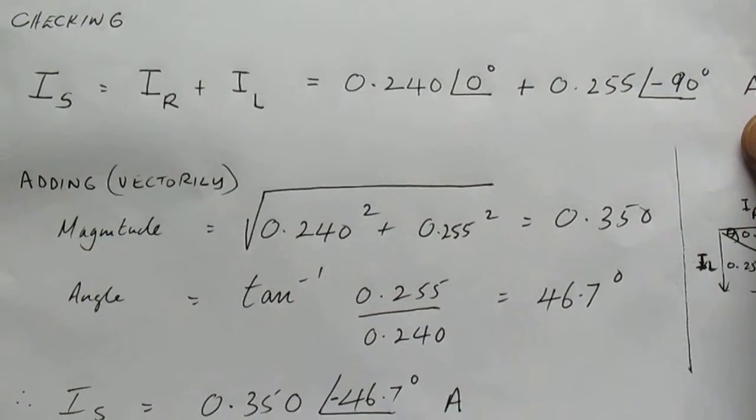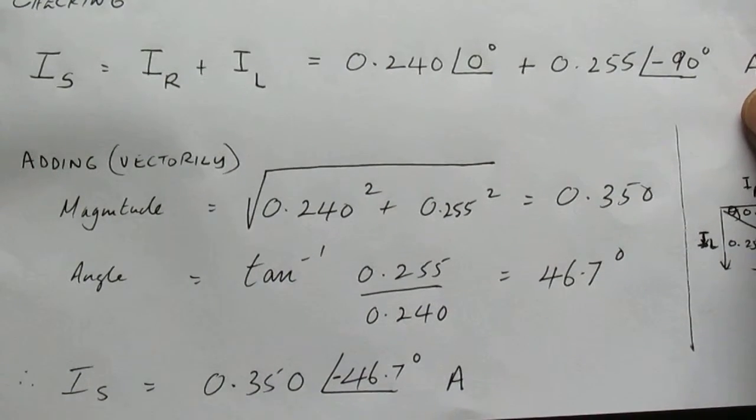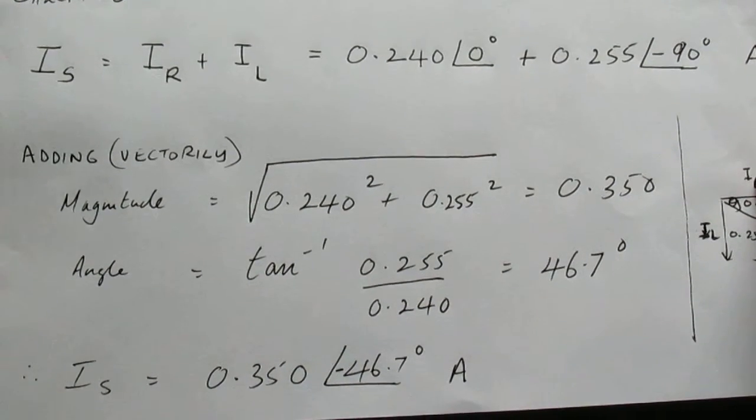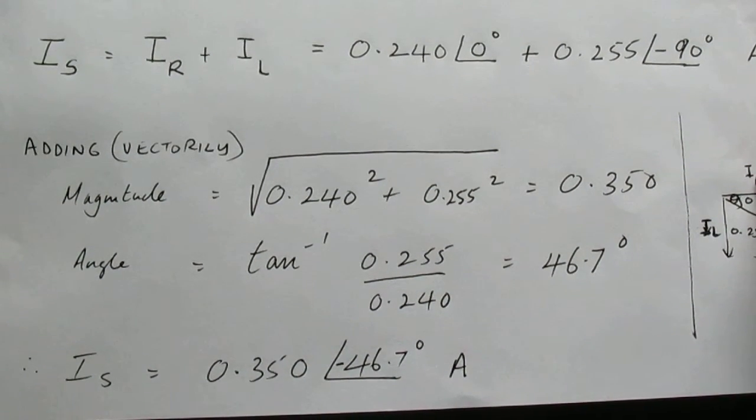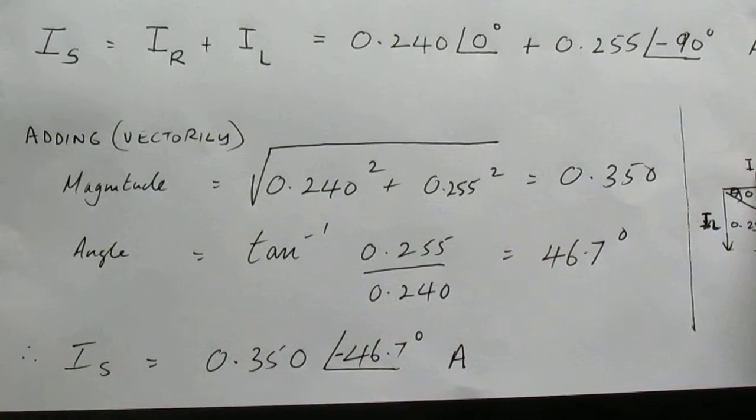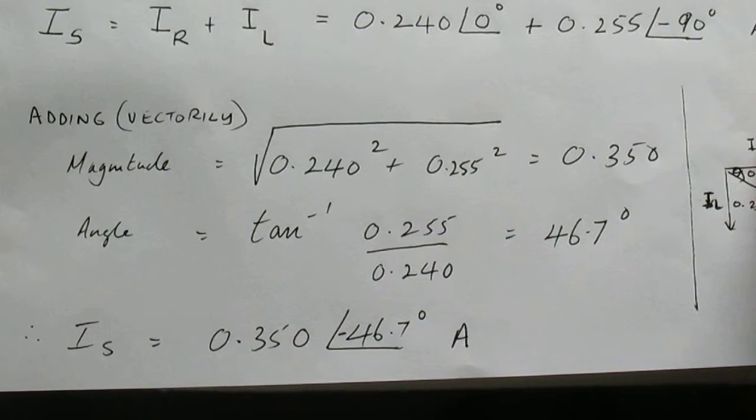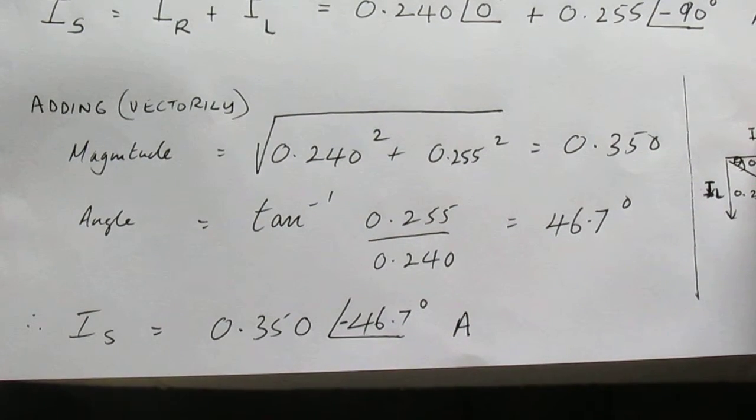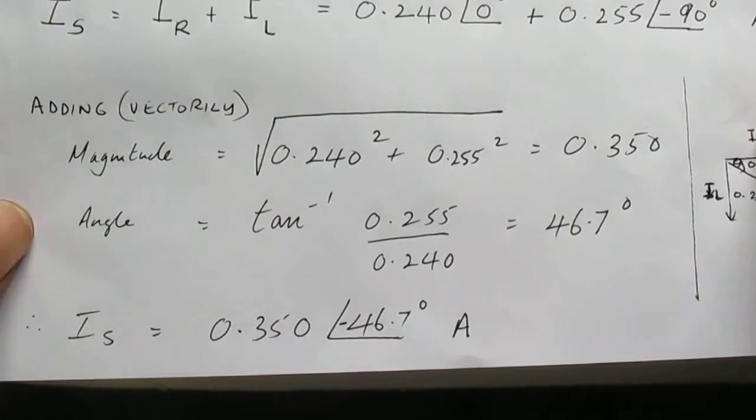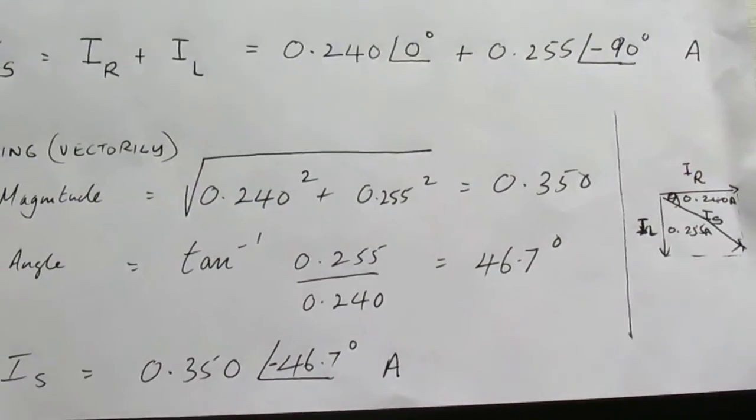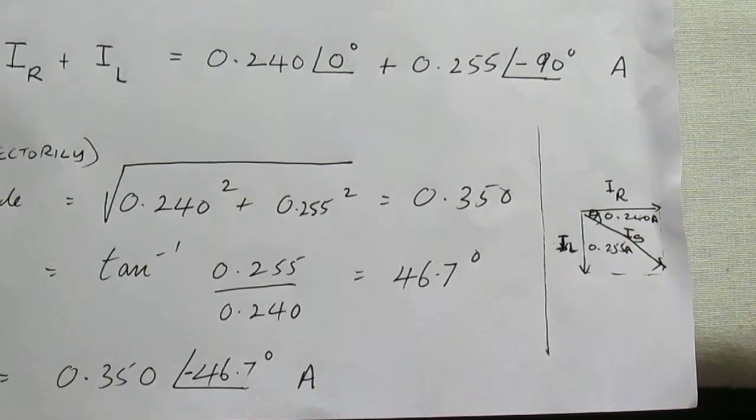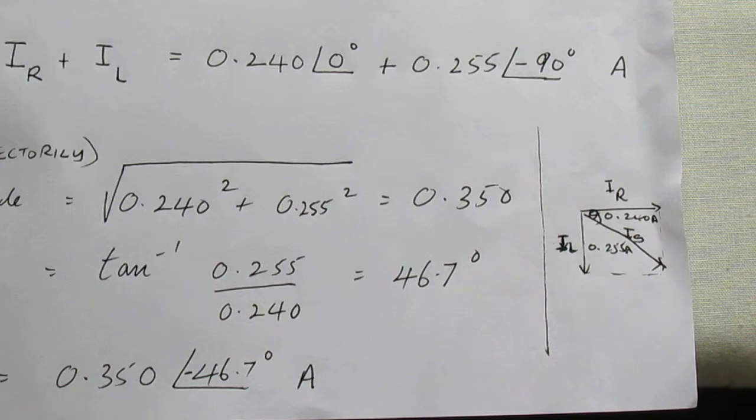The angle is the tan inverse of the magnitude of the inductive current divided by the magnitude of the resistive current. It gives tan inverse of 0.255 divided by 0.240, which equals 46.7 degrees.